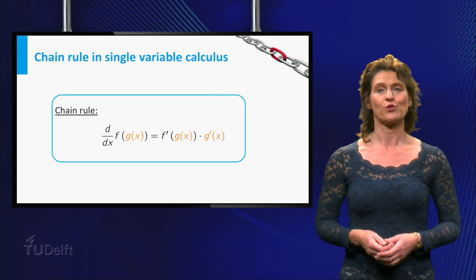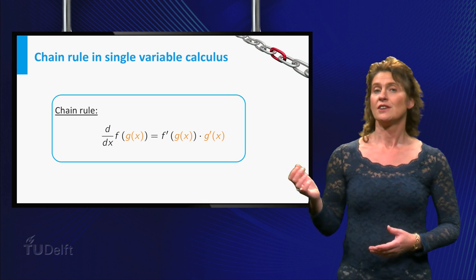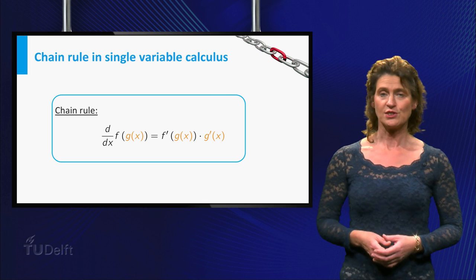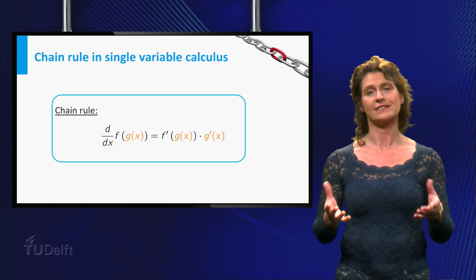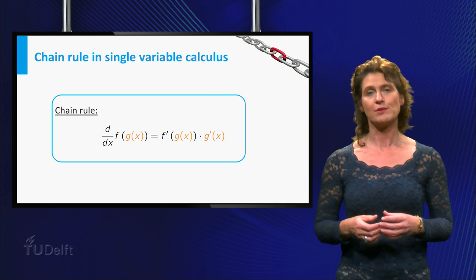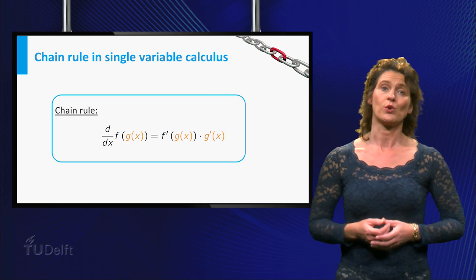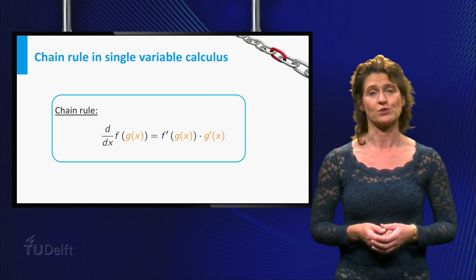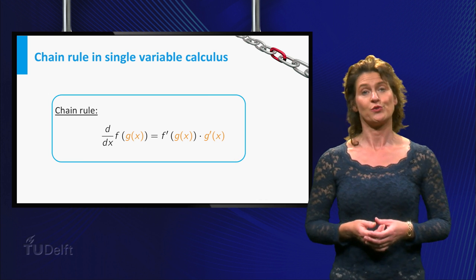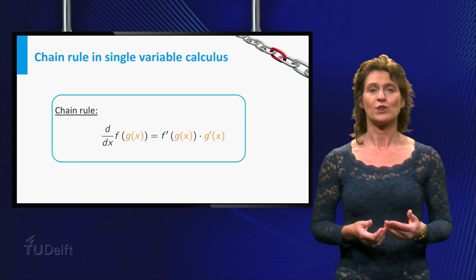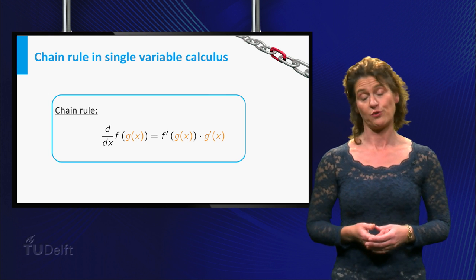The general formula for the chain rule for functions of one variable is here. The derivative of a composite function is the derivative of the outer function evaluated at the inner function times the derivative of the inner function. But you are working with functions of several variables, so in this video you will learn a version of the chain rule that you can apply to compute the derivative of a composite function of several variables.